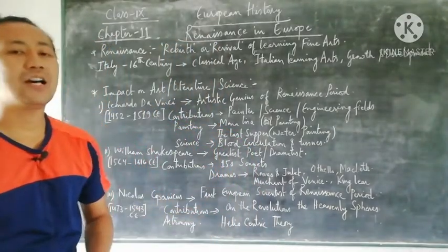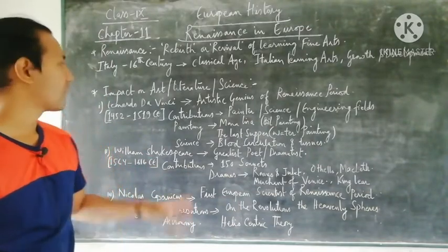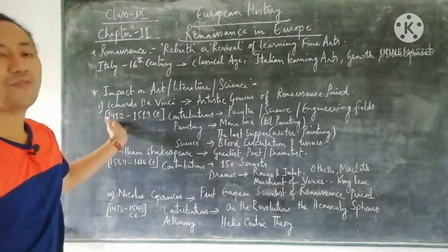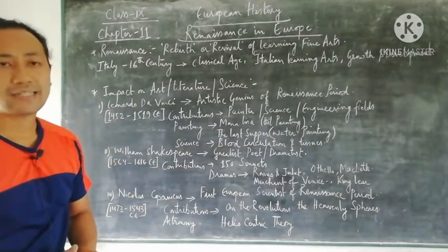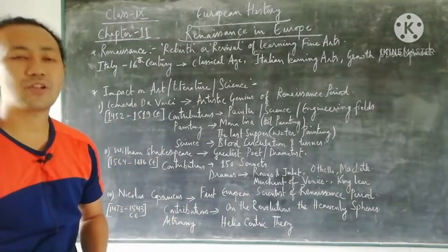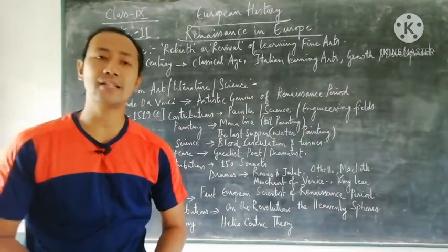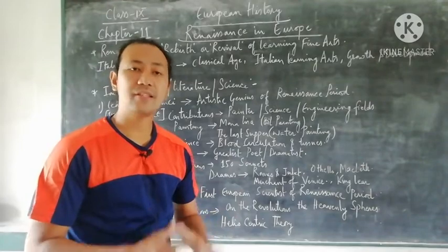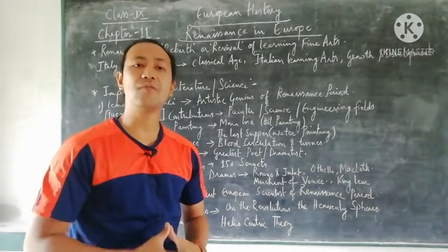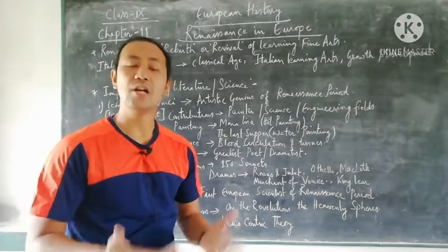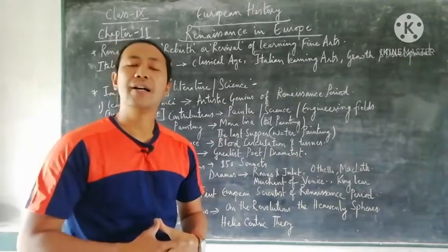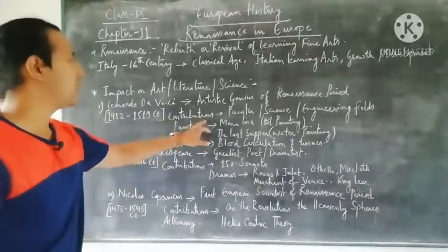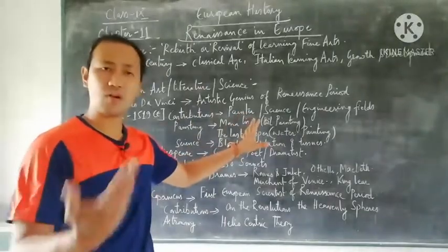First we'll see the contribution of Leonardo da Vinci, whose birth and death years were 1452 to 1519 CE. Within this period, he is considered one of the great artistic geniuses of the Renaissance period, because of his efforts, contribution, and the work he delivered in Italy and across European countries with great achievement and success.